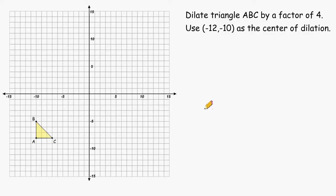This is Mr. Masonette, and in today's tutorial we are going to practice dilating objects on the coordinate plane when the center of dilation is not the origin. This problem wants us to dilate triangle ABC by a factor of 4, and we have to use negative 12 and negative 10 as the center of dilation.